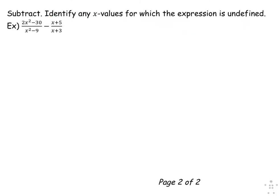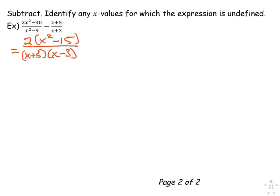In the final example, the direction is to subtract and we identify exclusions where appropriate. We start off by factoring — we can factor in the numerator and denominator. GCF first in the first fraction's numerator, then a difference of squares. No factoring for the second fraction. After factoring, I do exclusions before proceeding. I have to prevent x from being negative 3, positive 3, and negative 3 again — so positive or negative 3.